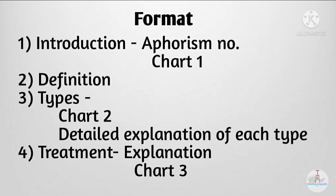The format is like this: first, introduction — in which you can write the aphorism number and use chart one from the PDF file; then the definition; then types with chart two from the PDF file and also detailed explanation of each type; lastly the treatment — first an explanation and then chart three from the PDF file. This is the ideal format, but you can cut some points or add more as per the requirement based on how the question is asked and the time availability. Rather than writing in straight lines, try to add as many flowcharts as possible and write answers in a point-wise manner.